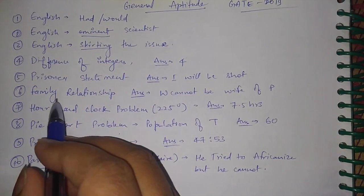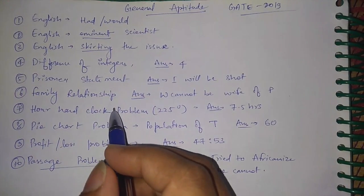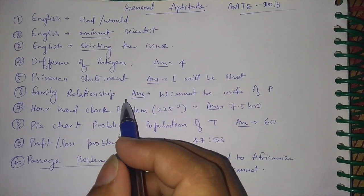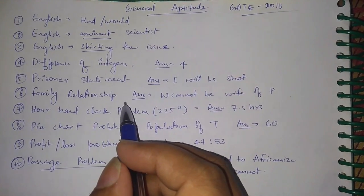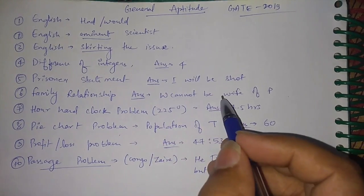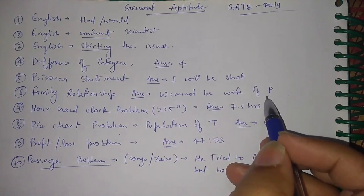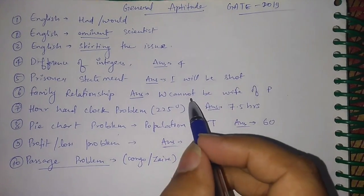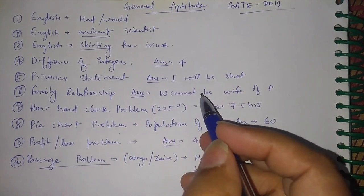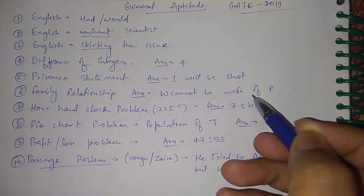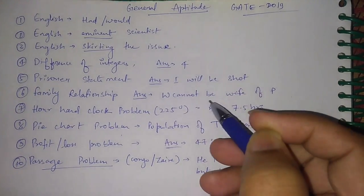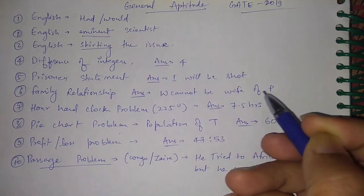Then there was a question on family relationships asking which option is not correct. One option stated that W is the wife of P, but that cannot happen — so W cannot be the wife of P, making option D the incorrect one.